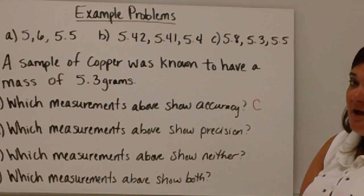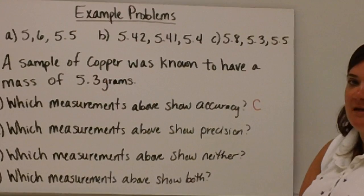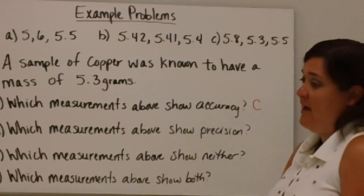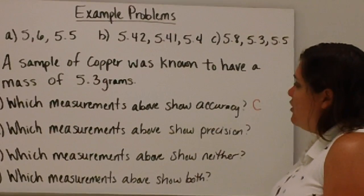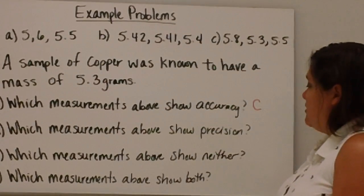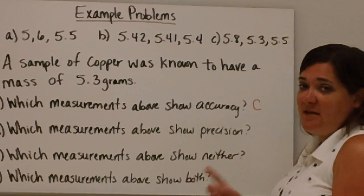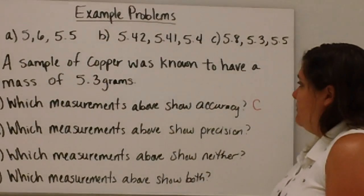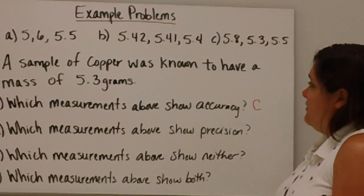Now remember, accuracy is just getting close to the right answer. So if you've got exactly the right answer, then you are very accurate. Which measurements above show precision? Again, precision is that the measurements have to be close to each other. So which measurements are closest to each other?